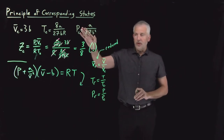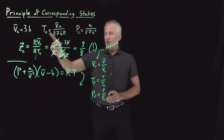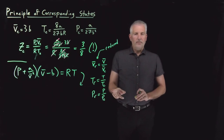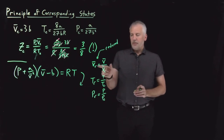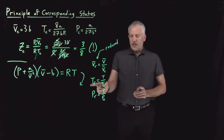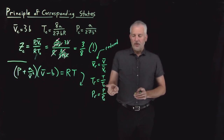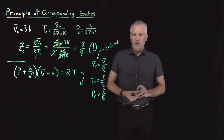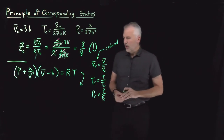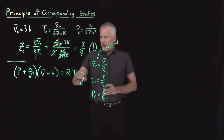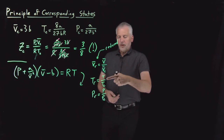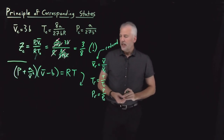So if we're exactly at the critical point, the reduced properties will all be exactly one. If the temperature is 10% larger than the critical temperature, then the reduced temperature will be 1.1. The reduced properties just tell us how far above or below the critical point we are. My goal is to rewrite the Van der Waals equation so it contains these ratios — volume to critical volume, temperature to critical temperature, and so on.